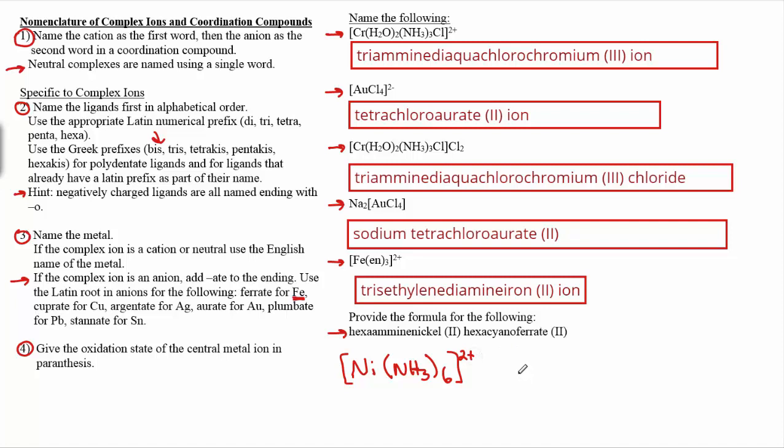So then we go to hexacyanoferrate(II). So we have a complex cation, now we also have a complex anion. So we're really being stretched here a little bit. So ferrate, iron, is the central metal ion. And hexacyano, there are six cyano ligands. And here we're told that iron's in the plus two oxidation state. Cyano ligands are all minus one. So overall, this guy has a negative four charge.